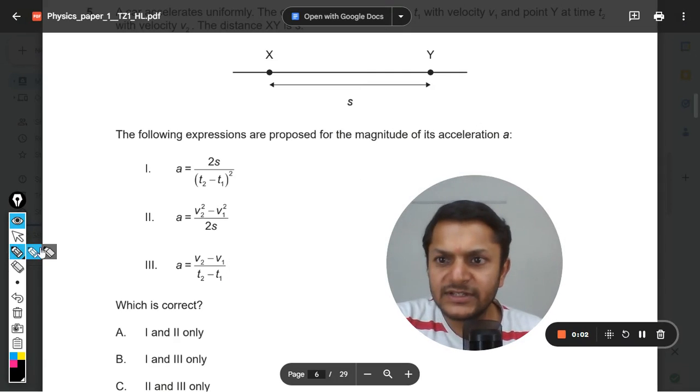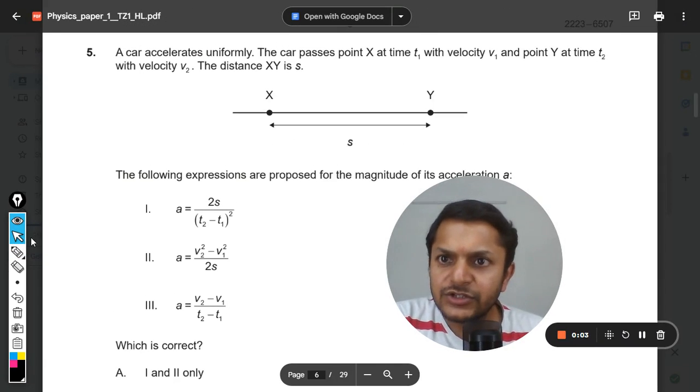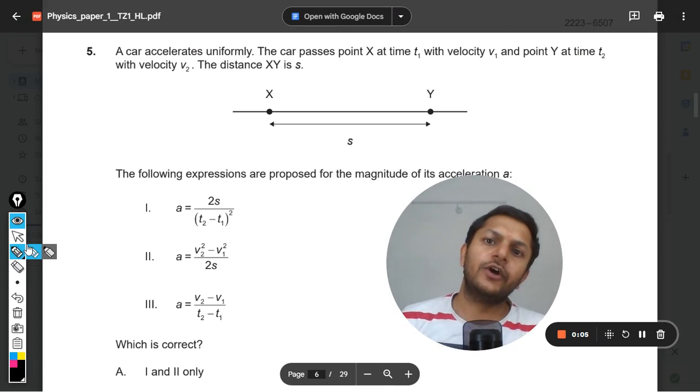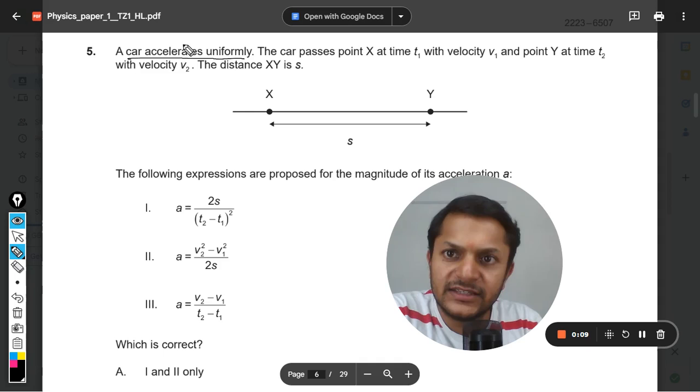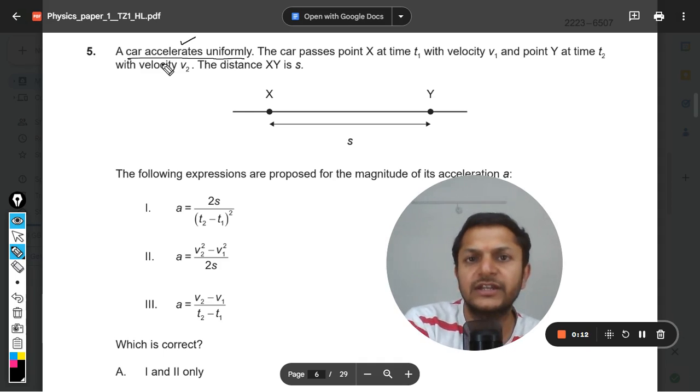Okay dear students, so let us see what is there in this question. A car accelerates uniformly. The car passes - so first condition is already given that the acceleration is uniform and constant, so it does not change its magnitude or direction.